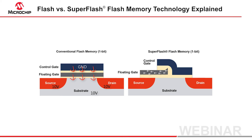Super flash does an erase very differently. It takes advantage of the high electric field around this raised edge. In this case, the source, substrate, and drain are held at ground and the control gate is brought high — let's use 10 volts. The electrons are pushed away from the grounded substrate and pulled toward the 10 volt control gate. They quickly tunnel into the control gate across this gap. The extra electrons are now gone and the bit is effectively erased.